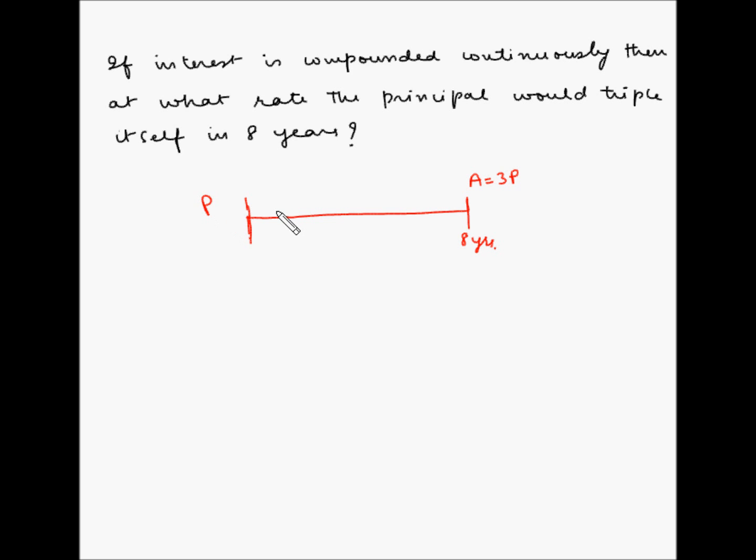The interest is being compounded continuously and we need to find out the rate R1 at which the principal would triple itself at the end of 8 years. We know that for cases where interest is being compounded continuously, amount is equal to principal multiplied by the constant e to the power of n1 R1 by 100.